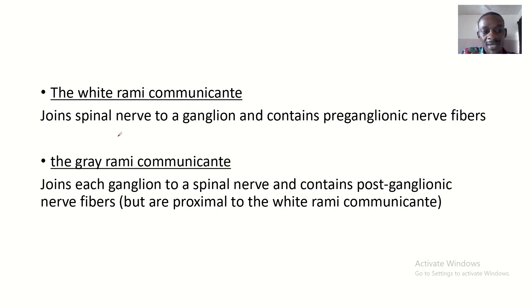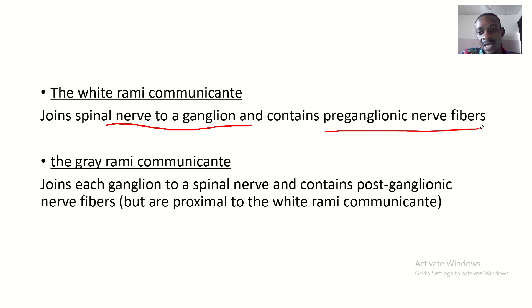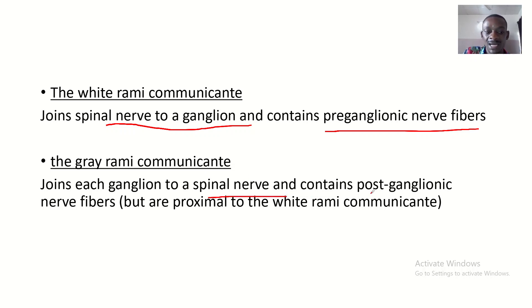The white rami communicantes joins the spinal nerve to a ganglion and contains pre-ganglionic nerve fibers. The gray rami communicantes joins the ganglion to the spinal nerve and contains post-ganglionic nerve fibers.